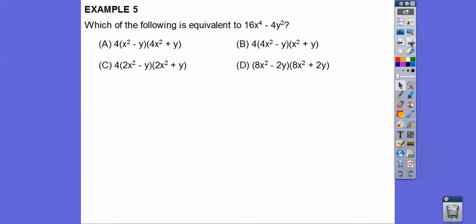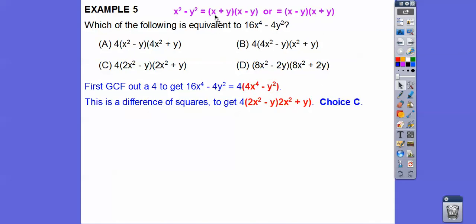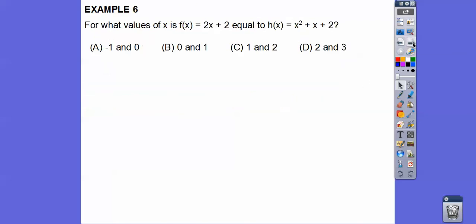Okay. Which of the following is equivalent to 16x to the 4th minus 4y squared? Well, first pull a 4 out. And then this is a difference of squares. Difference of squares factors to this pattern, x plus y, x minus y. So this factors to choice c right there. Again, got to go fast to save time.